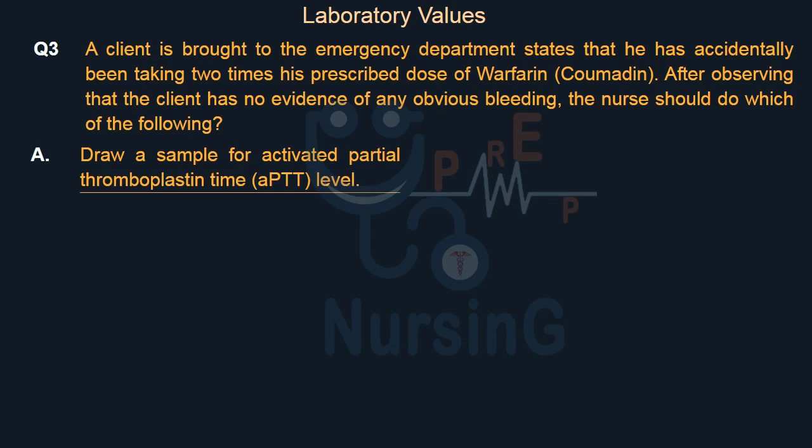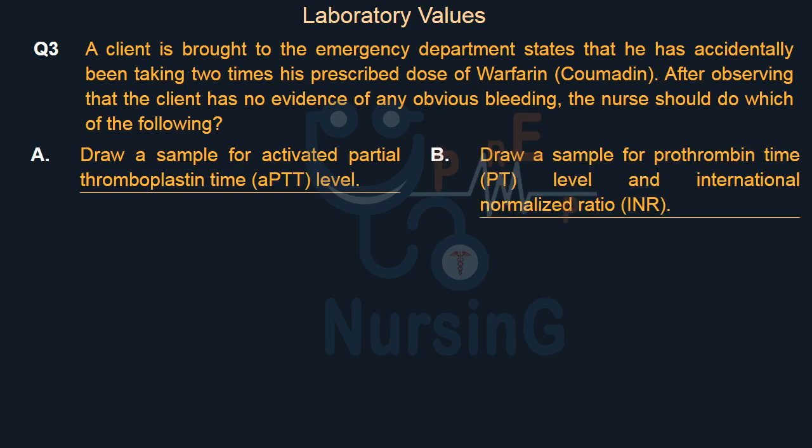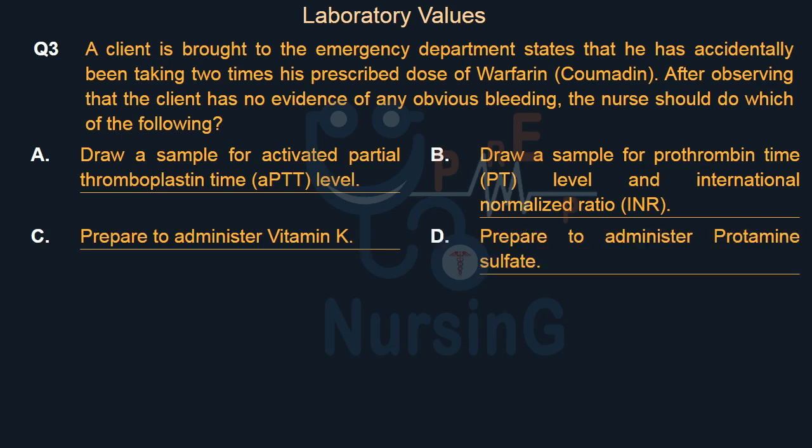Option A: Draw a sample for activated partial thromboplastin time (aPTT) level. Option B: Draw a sample for prothrombin time (PT) level and international normalized ratio (INR). Option C: Prepare to administer vitamin K. Option D: Prepare to administer protamine sulfate.